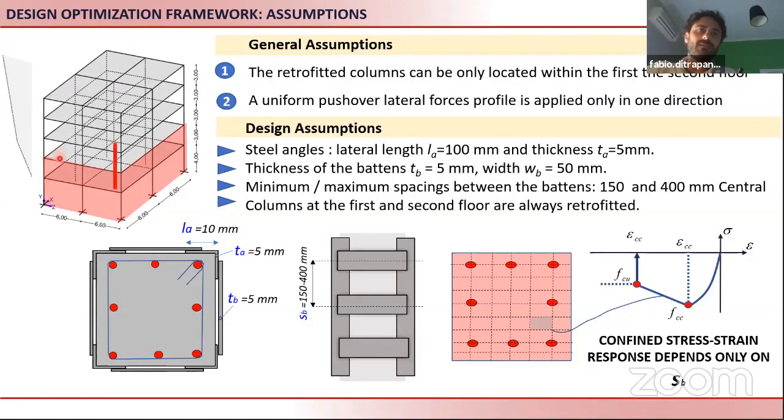At the end we have defined the most likely design space. In order to reduce the design space where searching is possible, we are restricting the design space to the first two floors, and within the first two floors we are defining the dimension of the angles and the thickness. Our algorithm will say us where to locate the retrofitting and which spacing for the buttons.